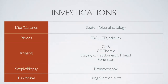The purpose of investigations in the patient with potential lung cancer is to screen for evidence of the lung cancer, define the site and size of the cancer, and also acquire histological typing. We'll take our usual five modality approach for investigations. For dips and cultures, we could think about doing sputum or pleural cytology. For bloods, we might consider doing a full blood count, liver function tests, and calcium.